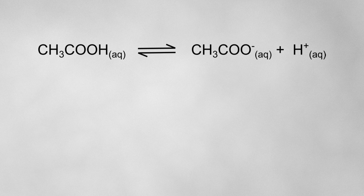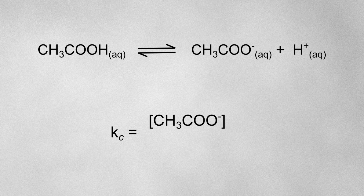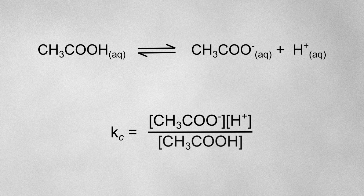A specific example of this is the equilibrium constant for the dissociation of a weak acid. For the equilibrium set up when ethanoic acid dissociates, Kc would be calculated by the concentration of H+ ions multiplied by the concentration of ethanoate ions, divided by the concentration of ethanoic acid. This type of equilibrium constant, involving the dissociation of a weak acid, is useful in a variety of calculations, so it has its own name: Ka, where the A stands for acid.